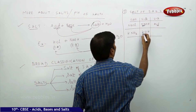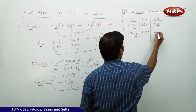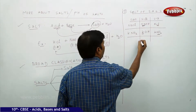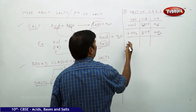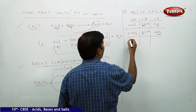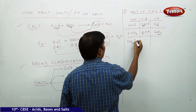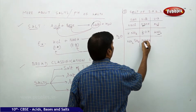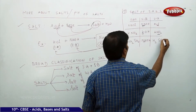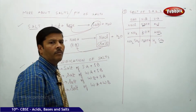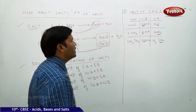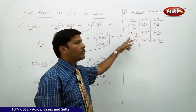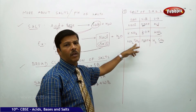We can take as many examples as possible. Sodium nitrate — strong base NaOH, strong acid HNO3. Sodium sulphate — base is NaOH, acid is H2SO4. So sodium chloride, potassium nitrate, and sodium sulphate are all salts of strong acid and strong base.